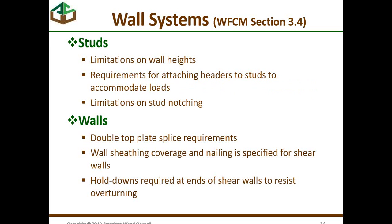Let's move to wall systems in terms of our load path continuity. The wall systems are covered in Section 3.4 of the manual. There are limitations on heights of studs, limitations on notching of studs so you don't lose too much cross-sectional area, requirements for attaching headers to studs to accommodate loads, double top plate splice requirements, sheathing coverage and nailing specified for shear walls, and hold-downs required at ends of shear walls to resist overturning.